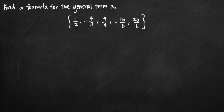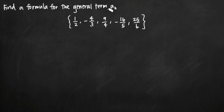Today we're going to be talking about how to find a formula for the general term of the sequence, a sub n. In this particular problem, we've been given the sequence of numbers one-half, negative four-thirds, nine-fourths, negative sixteen-fifths, and twenty-five-sixths. We need to find the general term, a sub n, which is the term where if we kept writing numbers in this sequence, we would find some pattern and could always plug in any number for n to get whatever that specific n-th term would be.